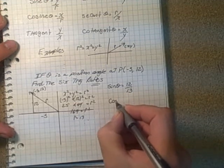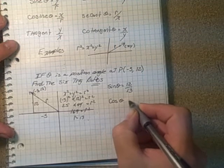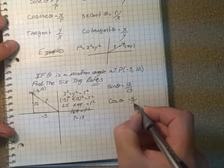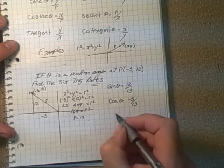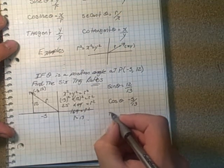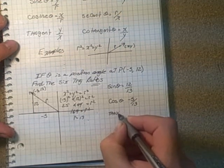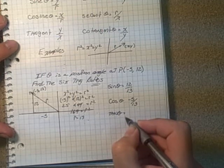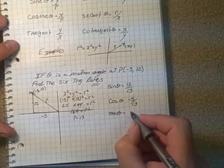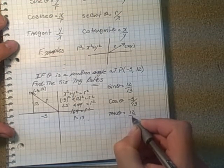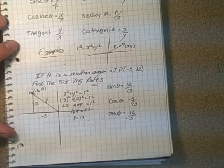Cosine theta, that's x over r. That would be -5 over 13. And then y over x for tangent. Y over x in this case is 12 over -5. So -5 would be there, a negative value.